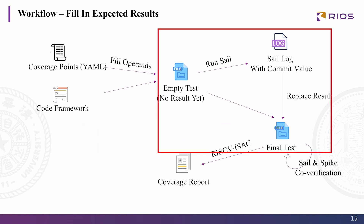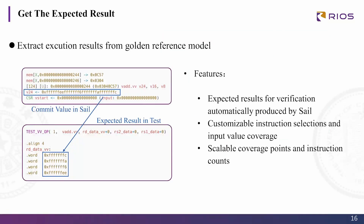Then we fill in expected results. The method is straightforward but practical — we extract the execution result from the log of the golden reference model. Using this approach, we don't need to simulate instruction behavior manually, but automatically get results via SAIL. We don't need to worry about input values because SAIL can handle every value. Configurations are also independent of this method, making it the best choice for our test generator.